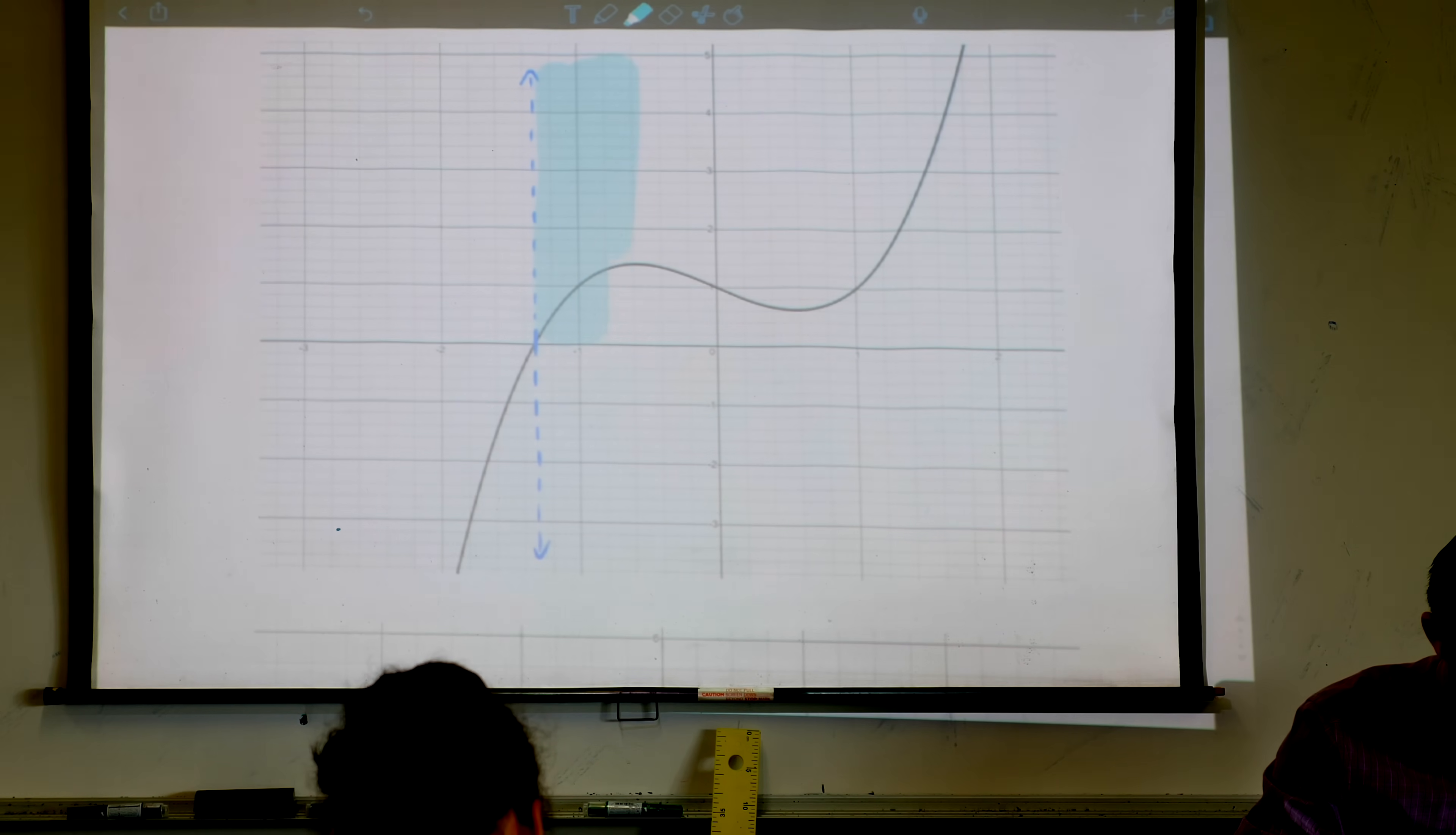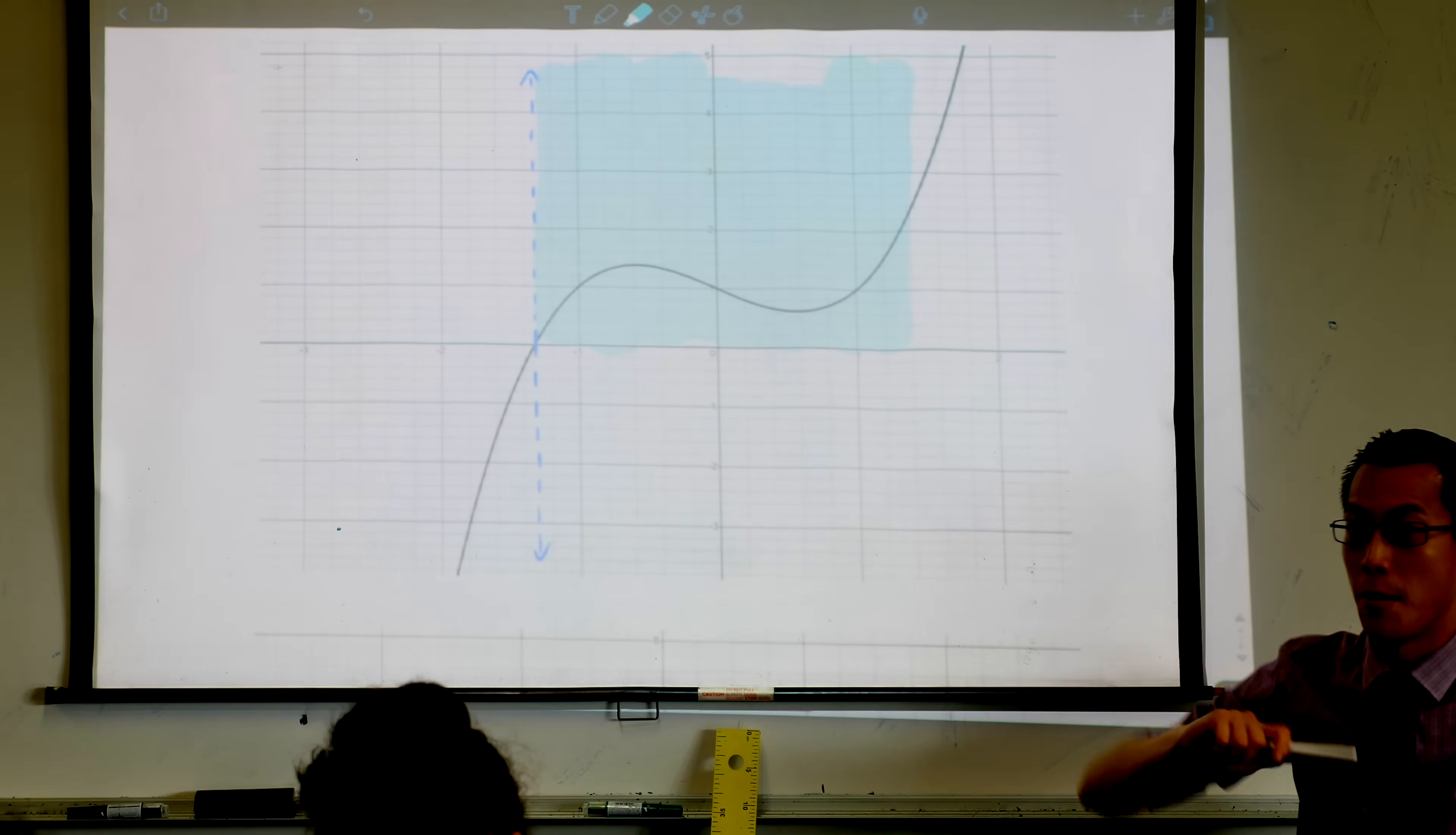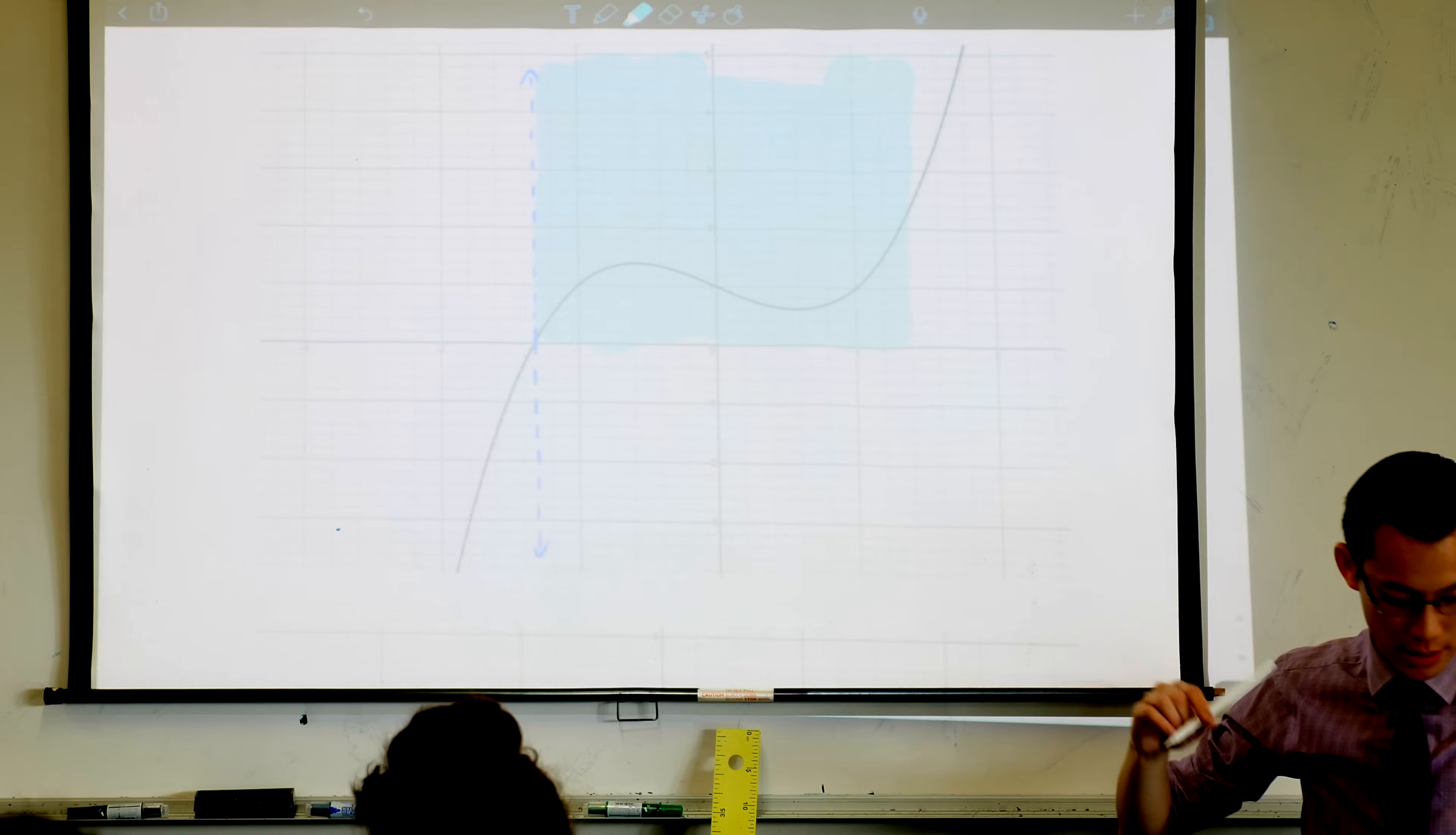Now over here, my reciprocal function, I'm very confident will be up in this area. How did I know that? What information did I use to work out that my reciprocal will eventually go through here? The original function is positive in this area, so therefore my reciprocal will also be positive.